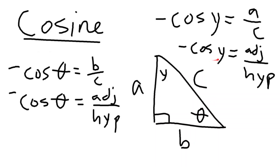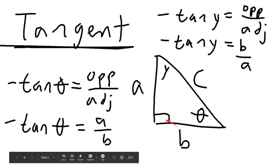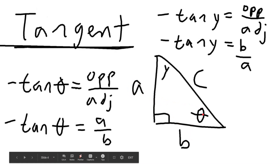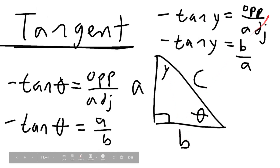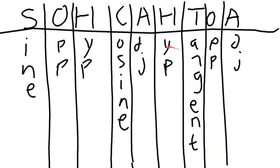Next up we have tangent. Tangent is opposite over adjacent. So tangent of theta equals a, which is the opposite side, over b, which is adjacent to theta. Tan y is opposite, which is b, over adjacent, which is a — so tan y equals b over a.